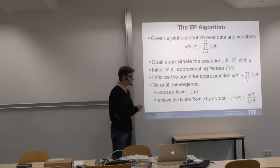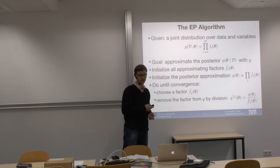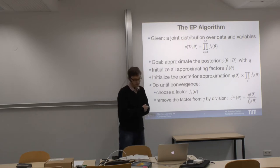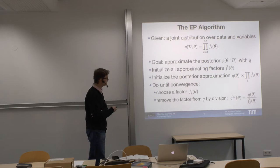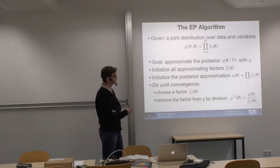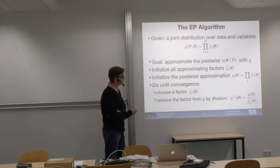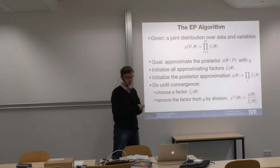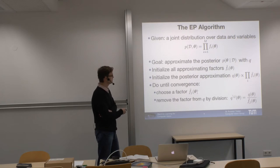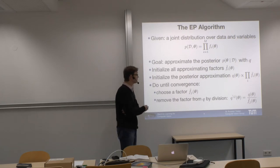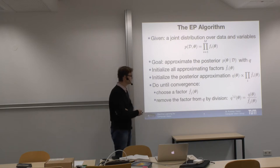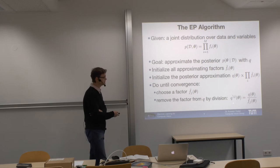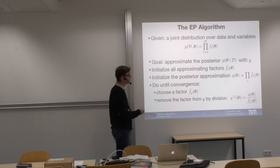These factors have some kind of simple form — in this case, exponential family form. The algorithm works like this: first, we initialize these factors. We say we have our approximation Q, and Q is all the factors, so first we need to initialize these factors with some value. Then we go through all these factors. We start with some factor J and remove that factor from Q by simply dividing by it. What we obtain is something called the cavity distribution — a valid distribution containing all factors except factor J.